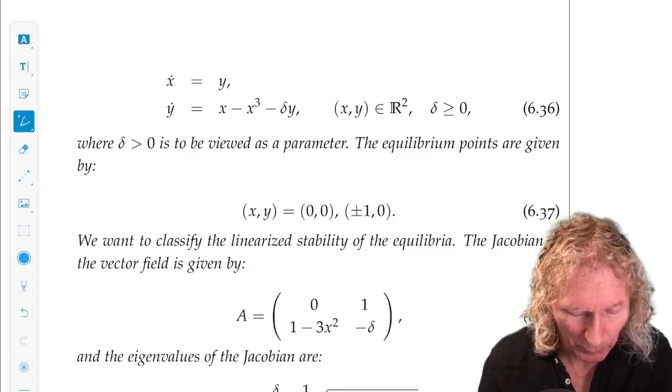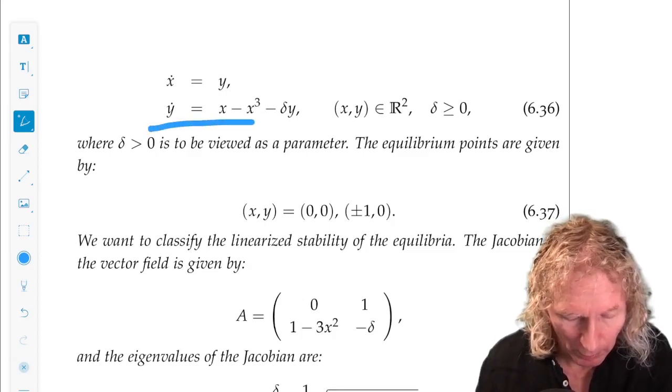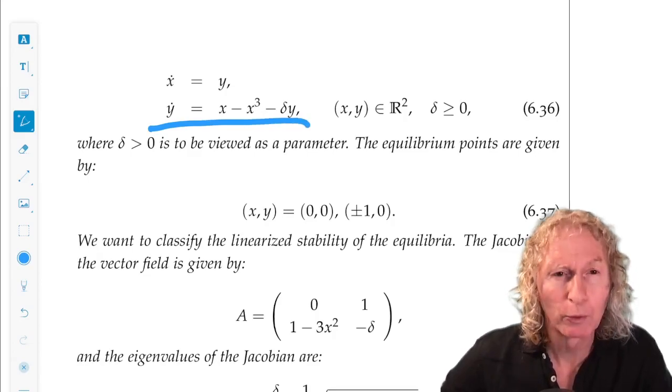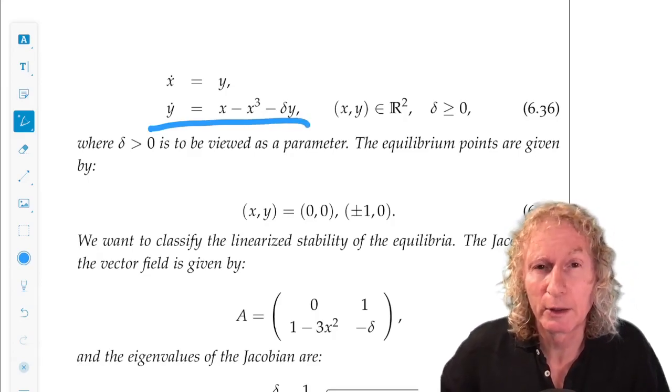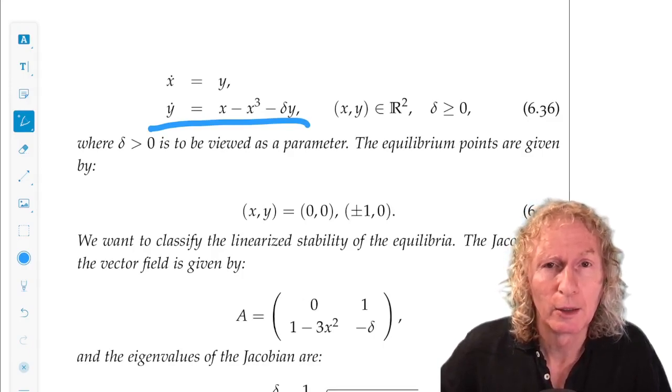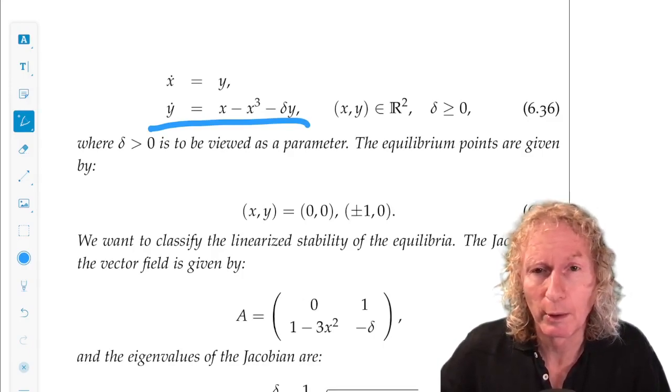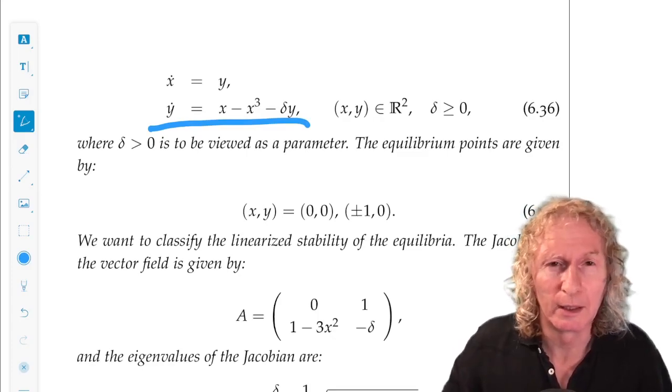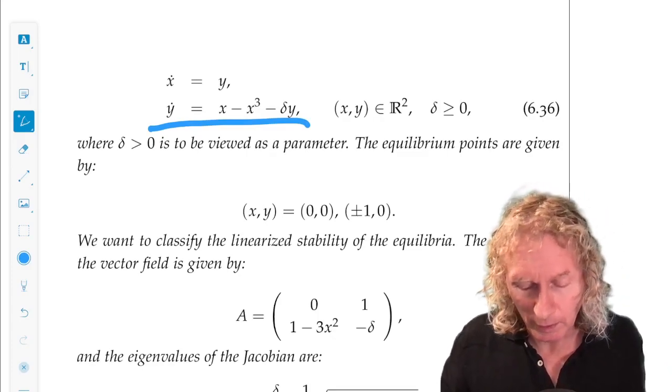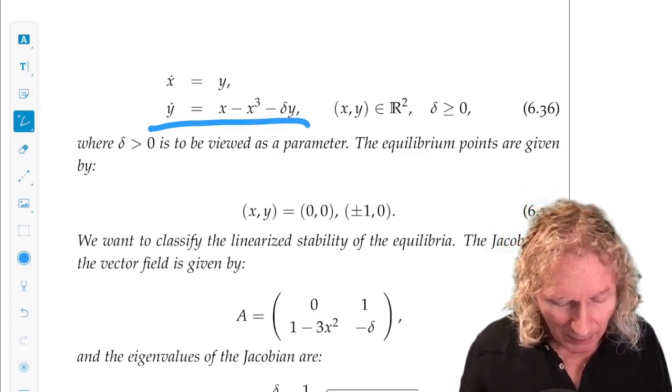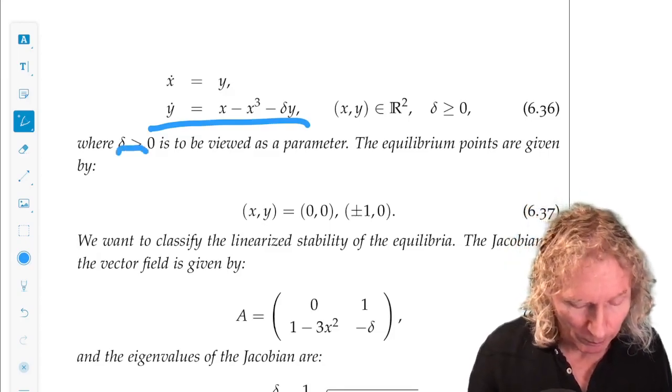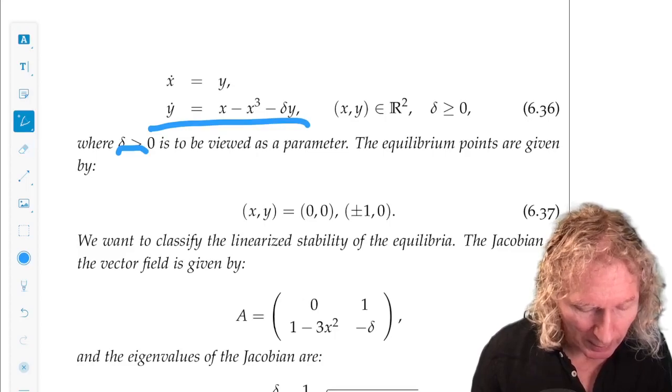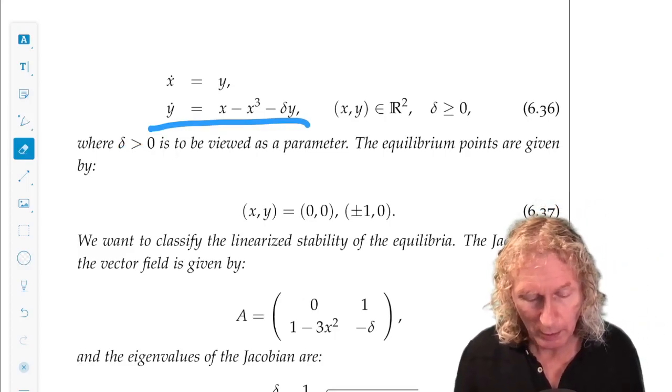Here's the example. It's an autonomous vector field on the plane. x dot equals y, y dot equals x minus x cubed minus delta y. Delta is a parameter, greater than or equal to zero in general. It could be negative, but that's not so interesting. In this example, we're just going to consider it to be strictly positive, and you'll be able to get a hint of what happens when it does vanish.